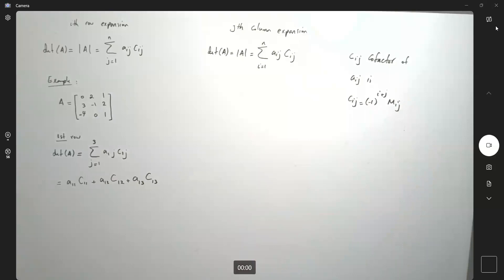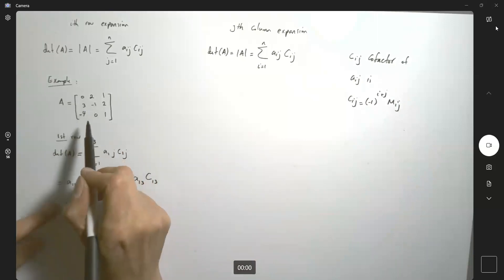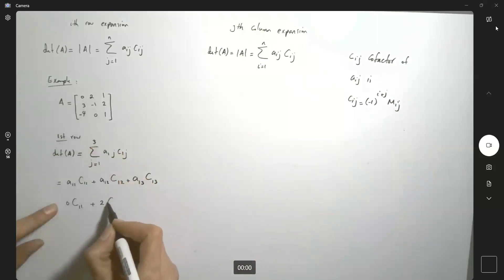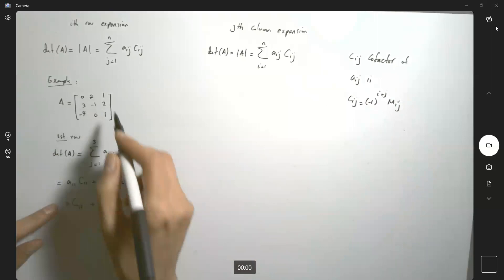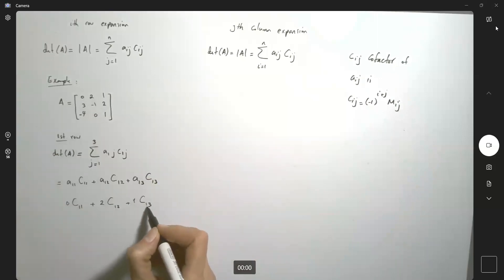So what is A1,1? It is 0 times C1,1 plus A1,2, which is 2, times C1,2 plus A1,3, which is 1, times C1,3.